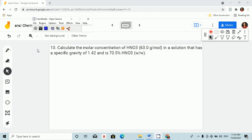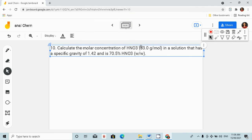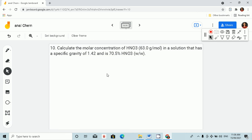Okay, so problem 10. Calculate the molar concentration of HNO3 nitric acid in a solution that has a specific gravity of 1.42 and is 70.5 percent weight, W per W. So this means weight of solute over weight of solution. Okay, so let's start.